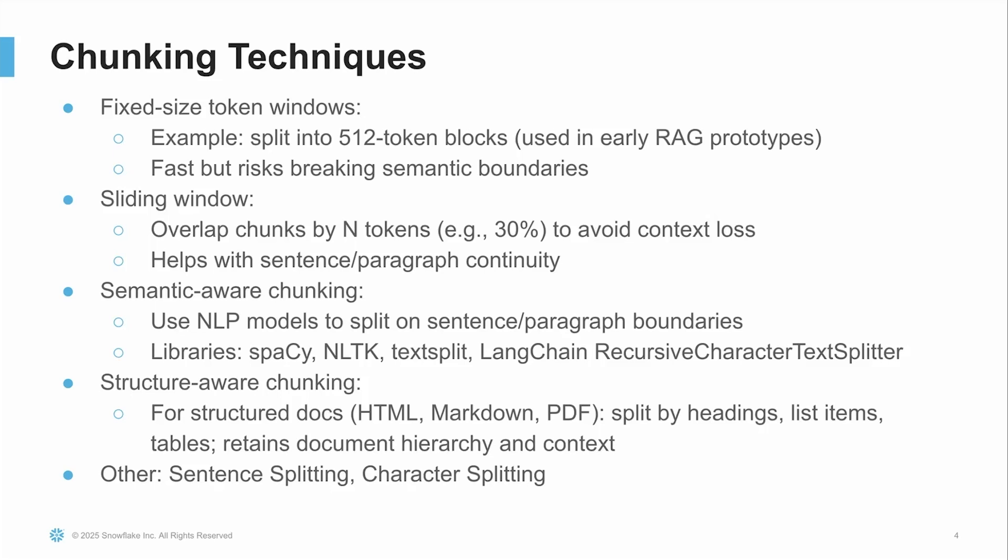For more structured documents like HTML, Markdown, or PDFs, structure-aware chunking works best. It splits content based on the document's actual structure, such as headers, lists, items, and tables. This approach helps preserve hierarchy and context, which is especially important in technical or formatted documents. There are also basic techniques like sentence-level or character-level splitting, which are often used as fallbacks or in combination with more advanced methods. The key takeaway is: the more your chunking is aware of the text's structure and meaning, the better your results will be downstream, whether you're doing search, retrieval, or generation.